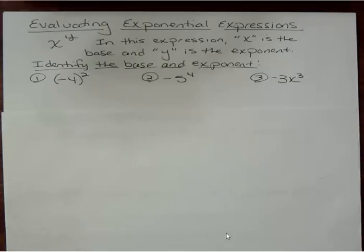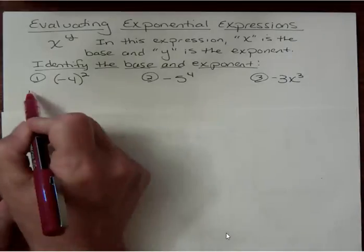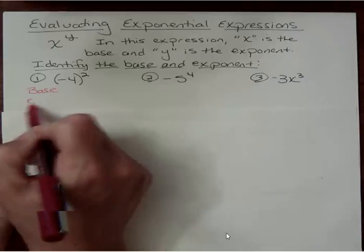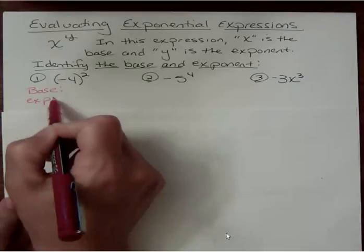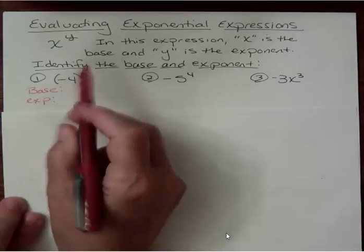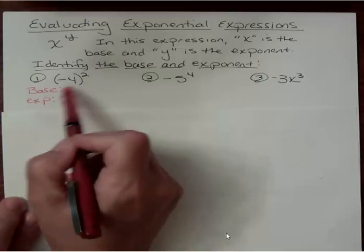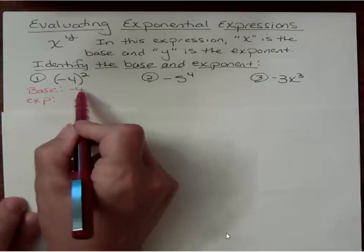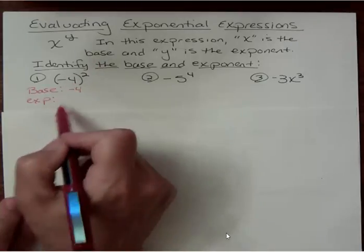You should try these on your own. This is a really important thing, and you need to be able to do that on your own. The base in this problem is negative 4. Because the parentheses are around it, we actually have a base of negative 4, and the power you probably got right of 2.